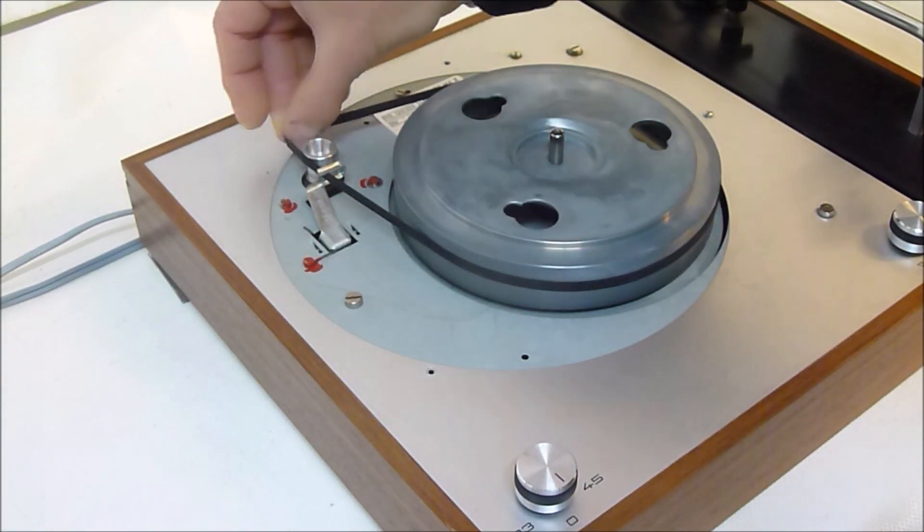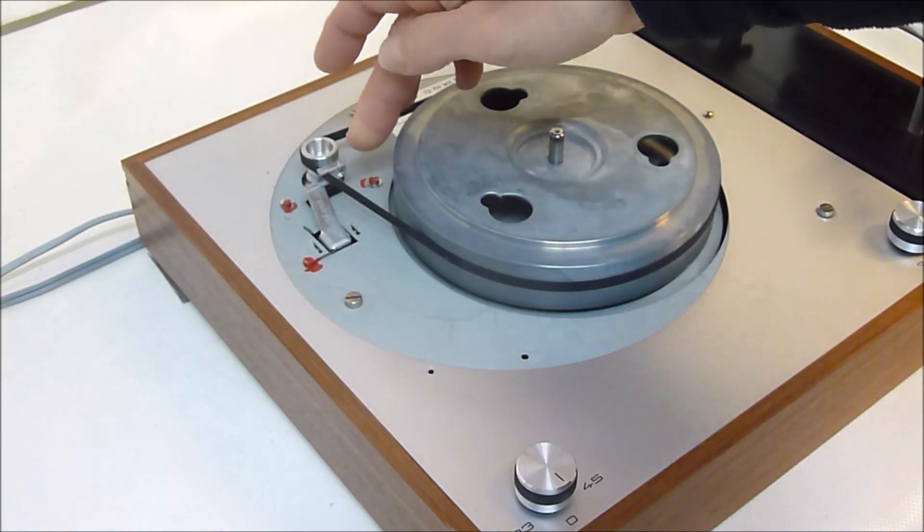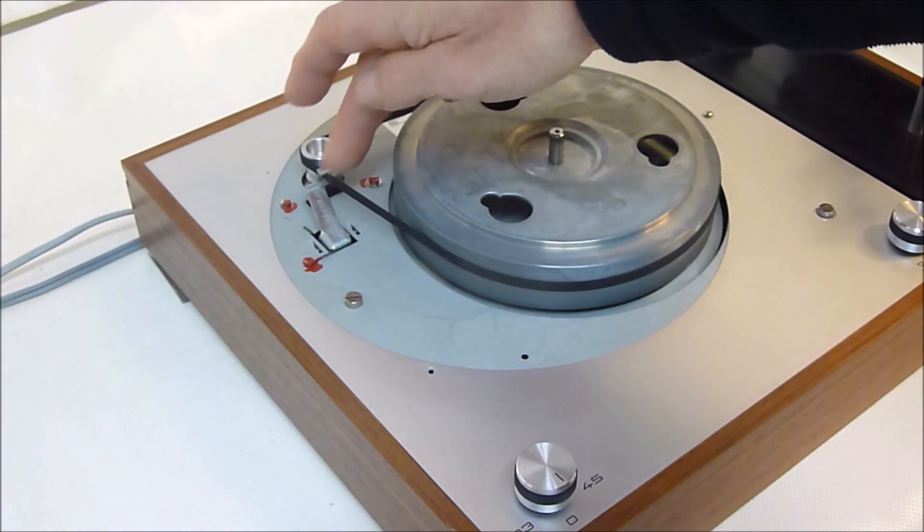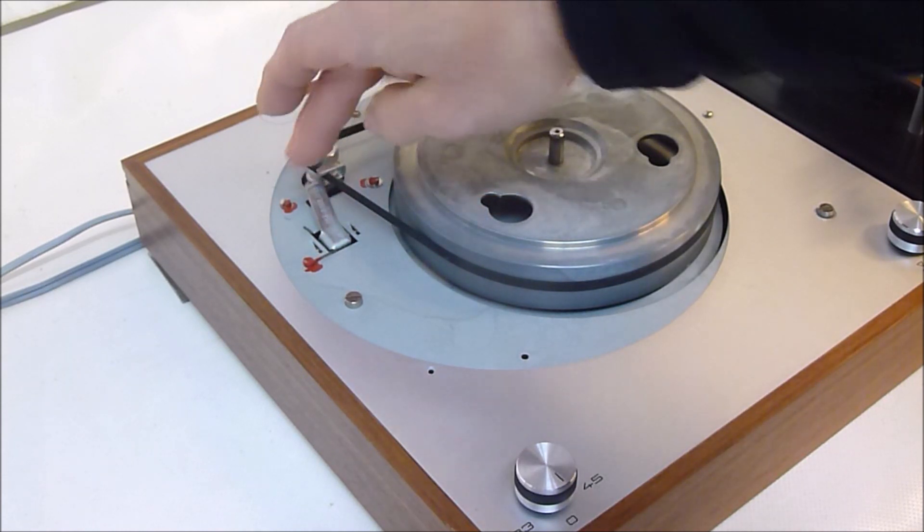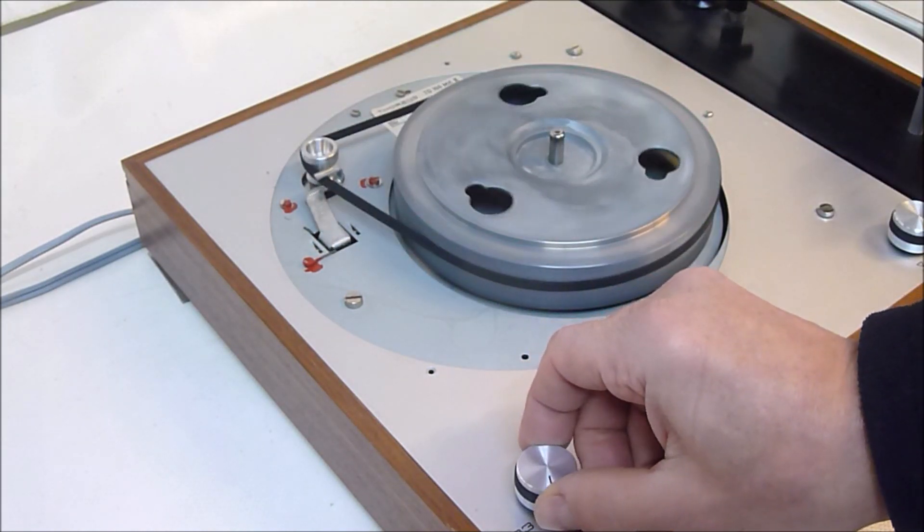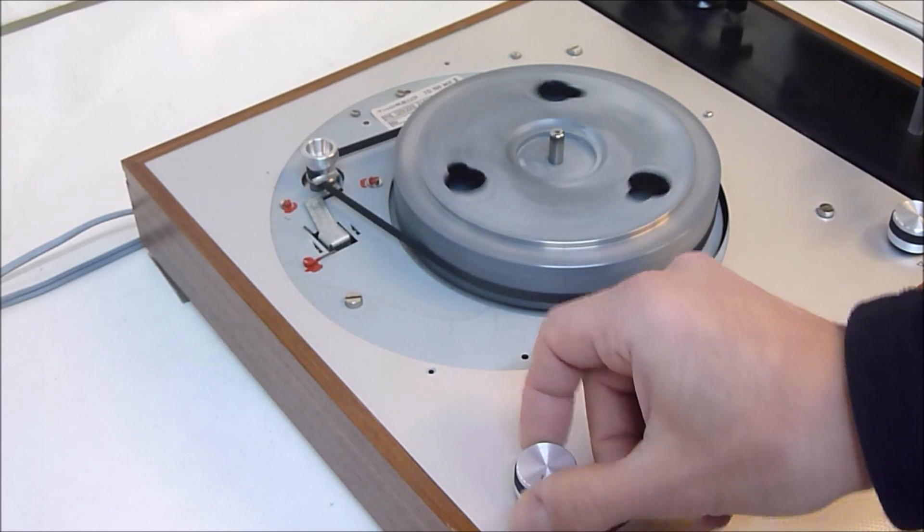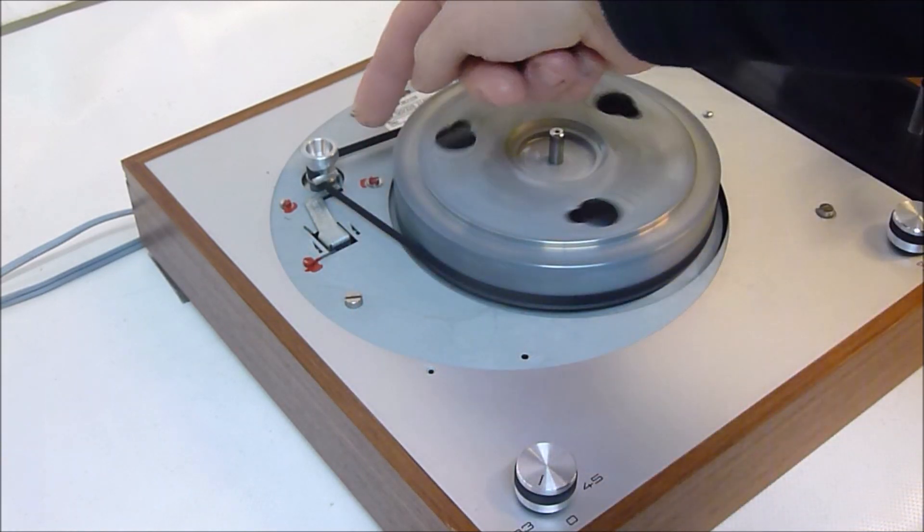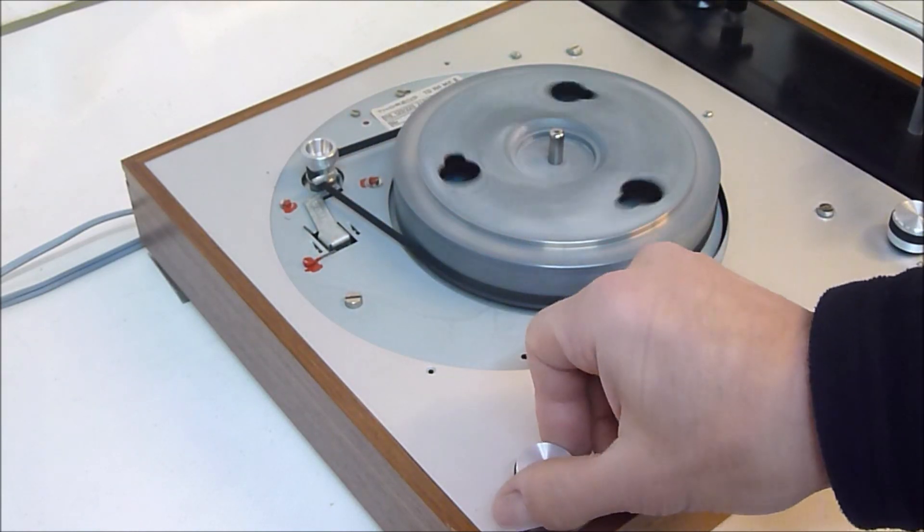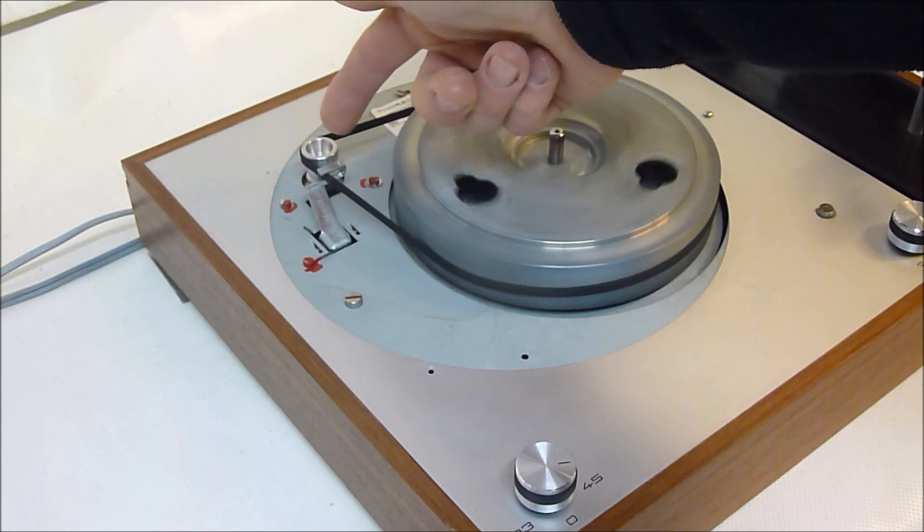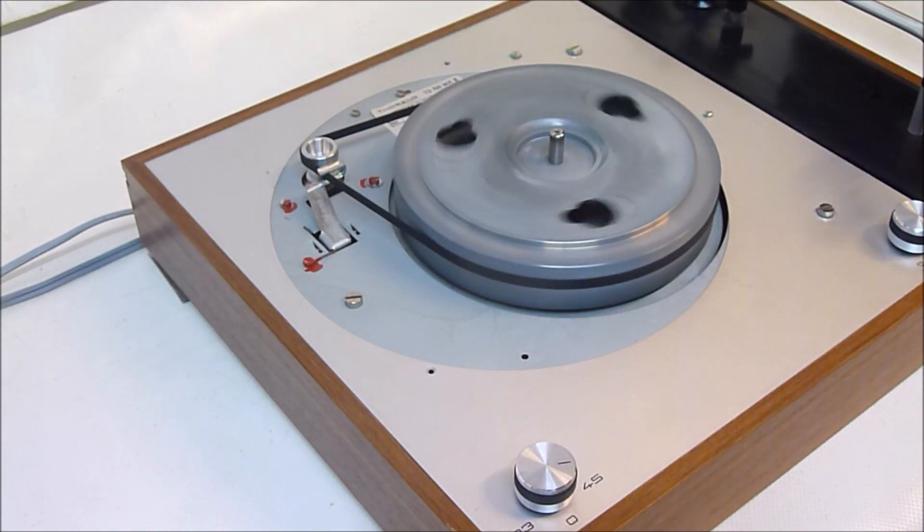And then round the motor pulley. Make sure the belt goes through this little feeder fork here that moves up and down to put the belt onto the lower part of the motor pulley for 33 rpm and up to the larger pulley for 45 rpm.